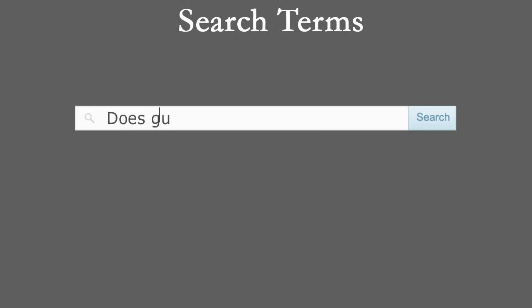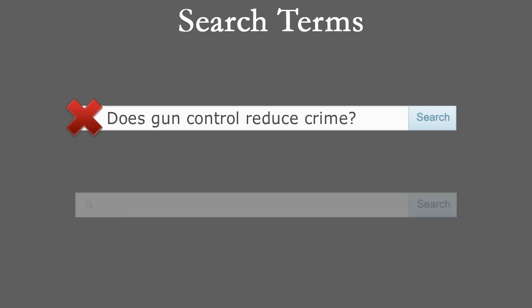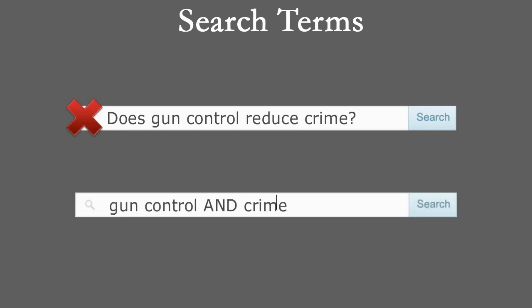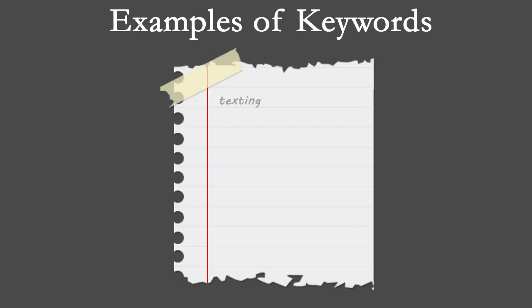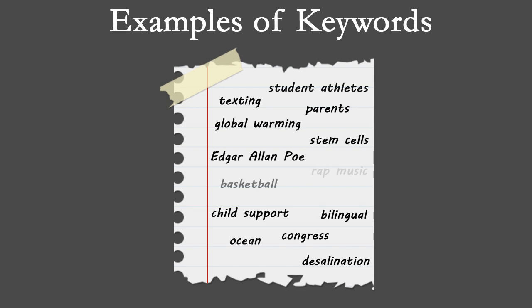In a search box, entering a sentence or a statement might seem like the simplest method of searching, but generally your results will be poor. Instead, you should enter keywords in the search box to obtain the best results. Keywords are individual words or short phrases that represent key elements of your topic.